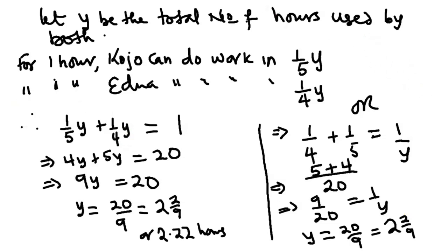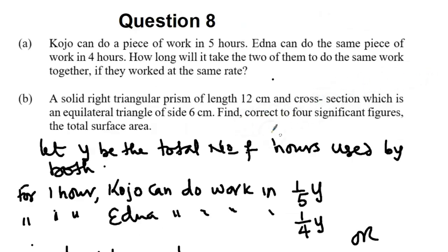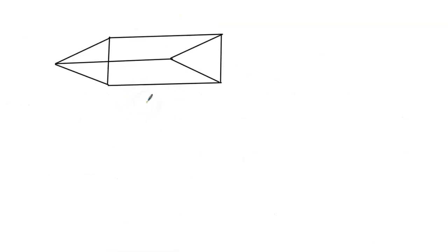Let's check the second question. A solid right triangular prism of length 12 centimeters. So we have to find the total surface area. Now questions on mensuration require you to draw the diagram. So this is the prism in which the base is equilateral. And then the base has each side 6 centimeters. And then the length is 12 centimeters. Now to find the total surface area, you need to know this is the cross-sectional area, the triangular surface.